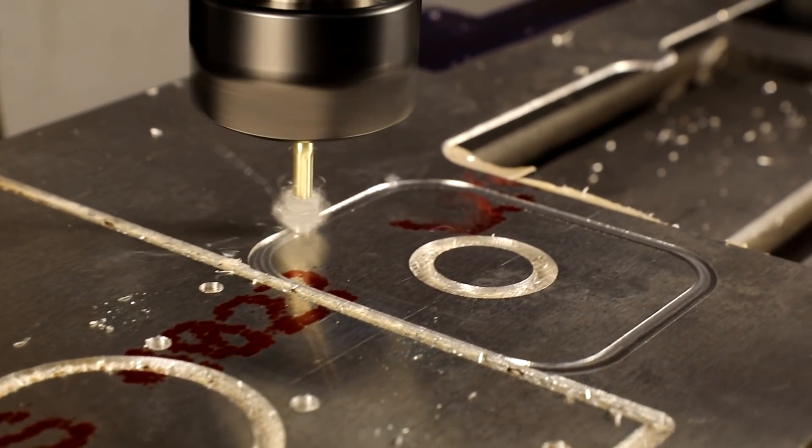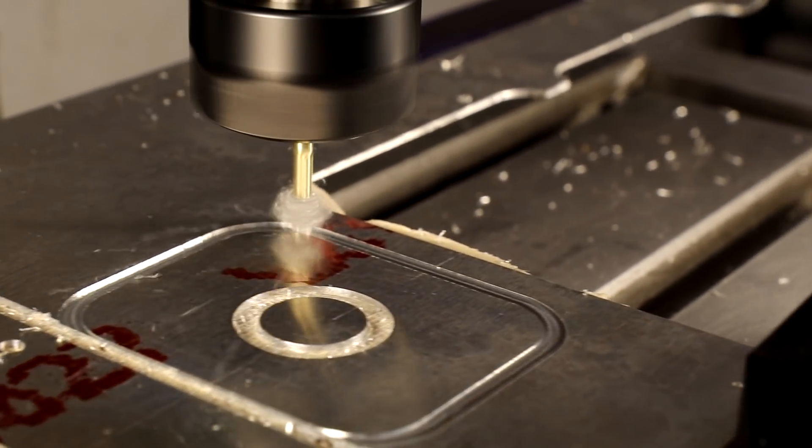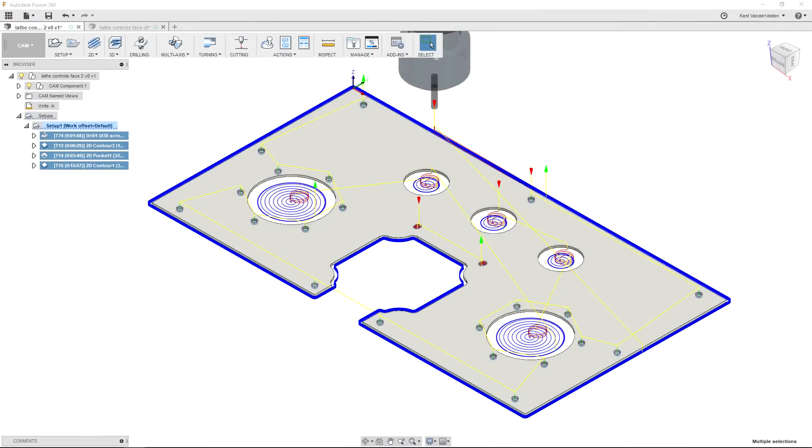The second plate is what will hold the emergency stop push button. If making these parts again I would use a larger end mill to remove all the material out of the center.